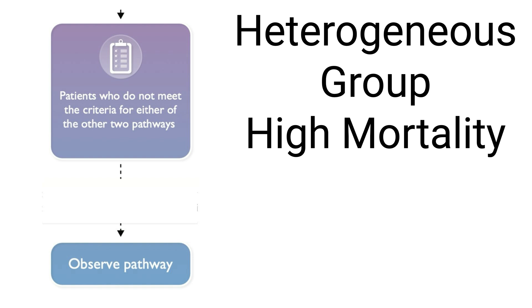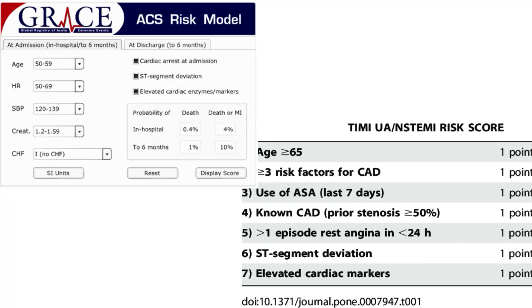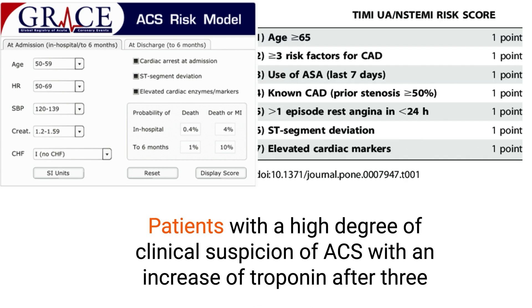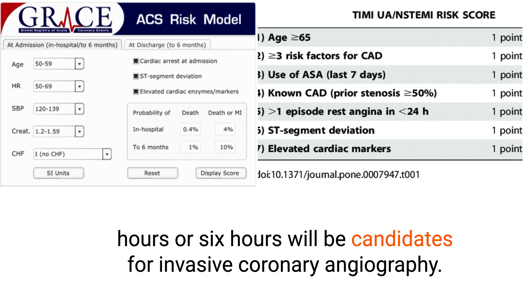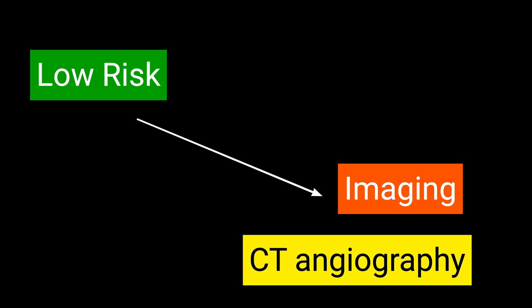Patients who do not qualify for rule-out or rule-in are assigned to the observe pathway. These patients represent a heterogeneous group and have been shown to have a mortality comparable to rule-in patients — therefore they need to be managed carefully. In this group, we can rely on risk scores like the TIMI risk score or the GRACE risk score. We can also do a third measurement of troponin at 3 or 6 hours. Patients with high clinical suspicion of ACS and an increase in troponin after 3 or 6 hours will be candidates for invasive coronary angiography, while low or intermediate risk patients are usually candidates for non-invasive imaging such as coronary CT angiography.